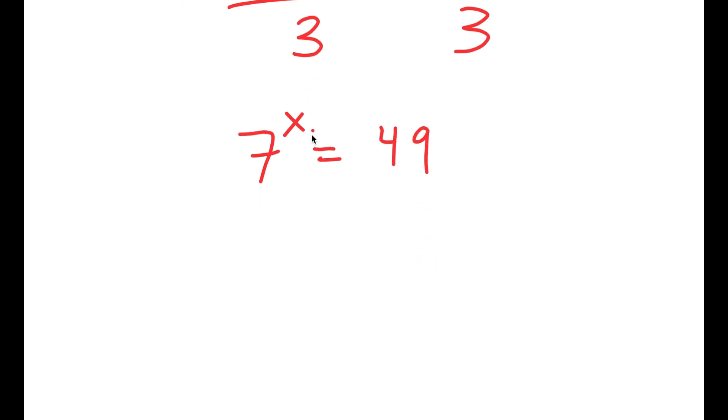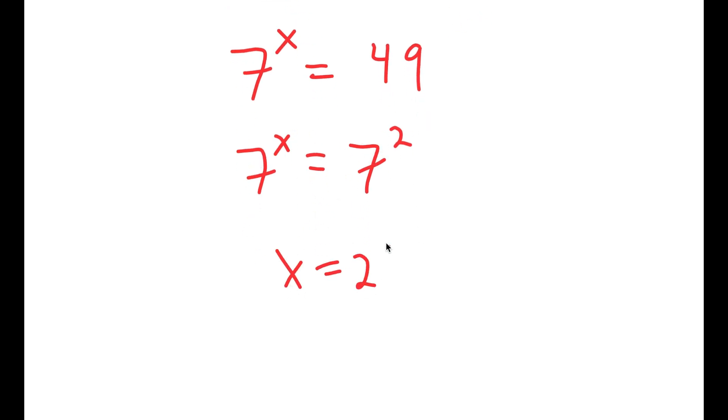So I get 7 to the power of x is equal to 49, and 49 is equal to 7 squared. So I have 7 to the power of x is equal to 7 to the power of 2, meaning x is equal to 2.